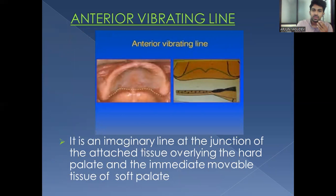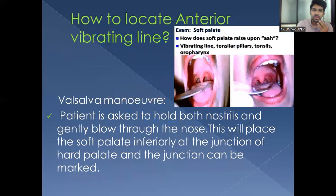The anterior vibrating line is an imaginary line at the junction of the attached tissue overlying the hard palate and the immediately moving tissue of the soft palate. It is cupid-shaped and marks the junction of hard and soft palate where movement begins. To locate it, the Valsalva maneuver is used: the patient is asked to hold both nostrils and gently blow through the nose, which places the soft palate inferiorly so the junction can be marked.